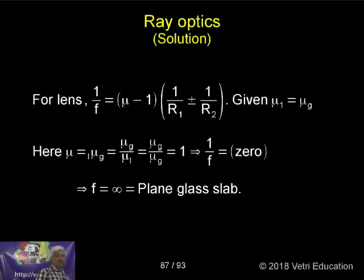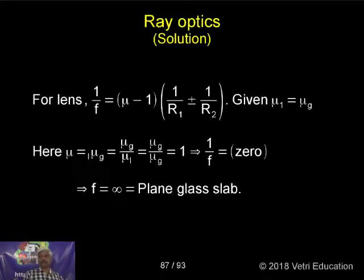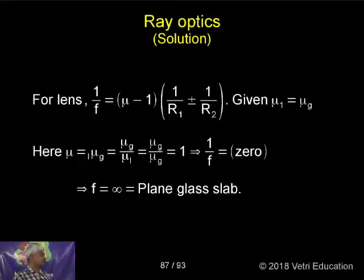For a lens, 1/f = (μ − 1) × (1/R₁ − 1/R₂). This formula is called the lens-maker's formula.